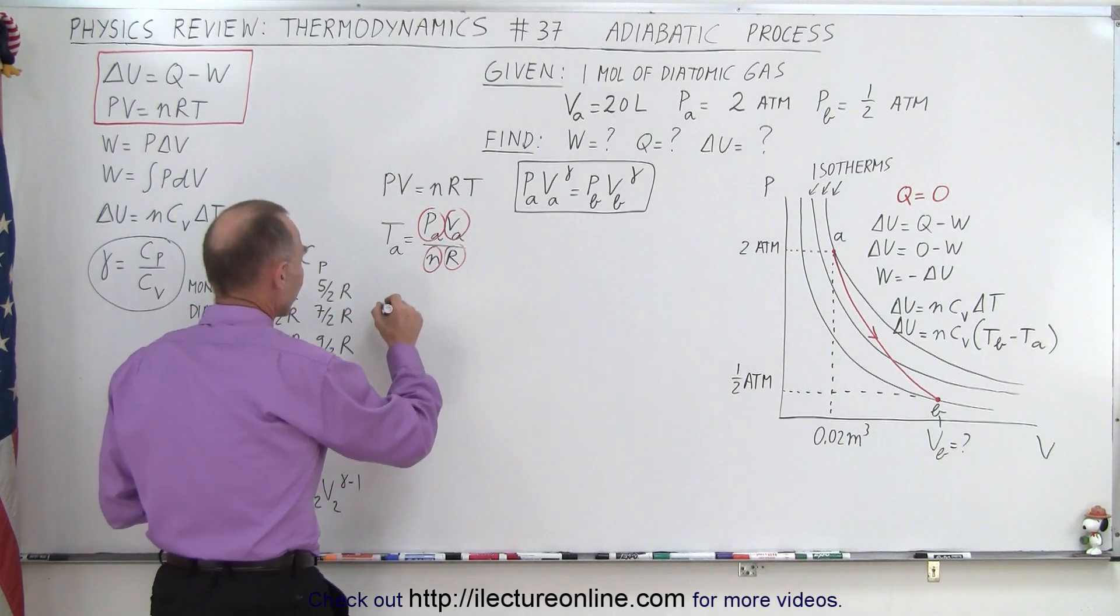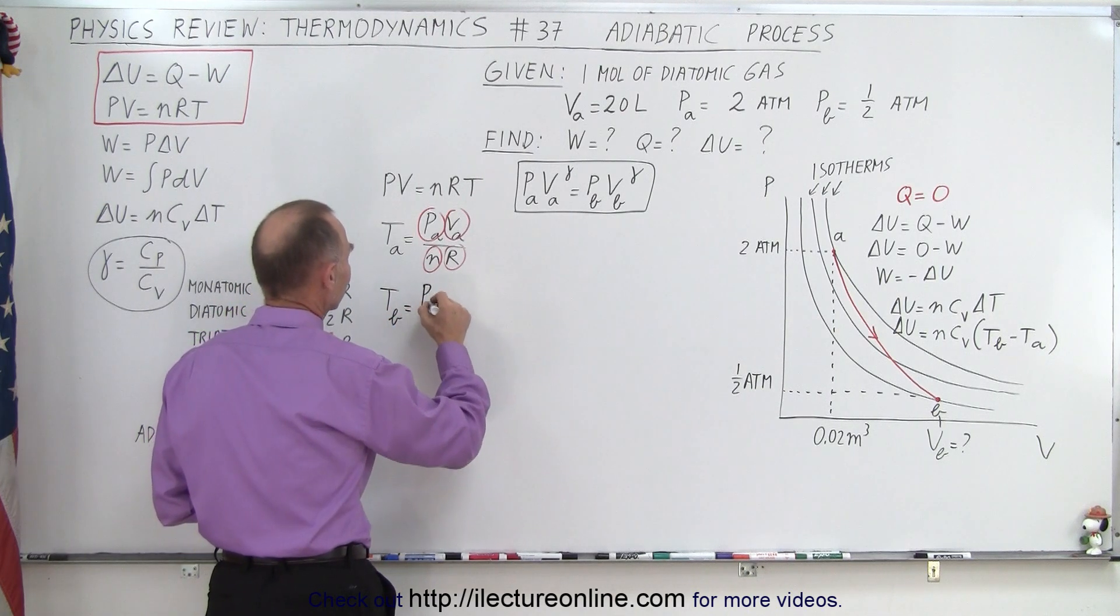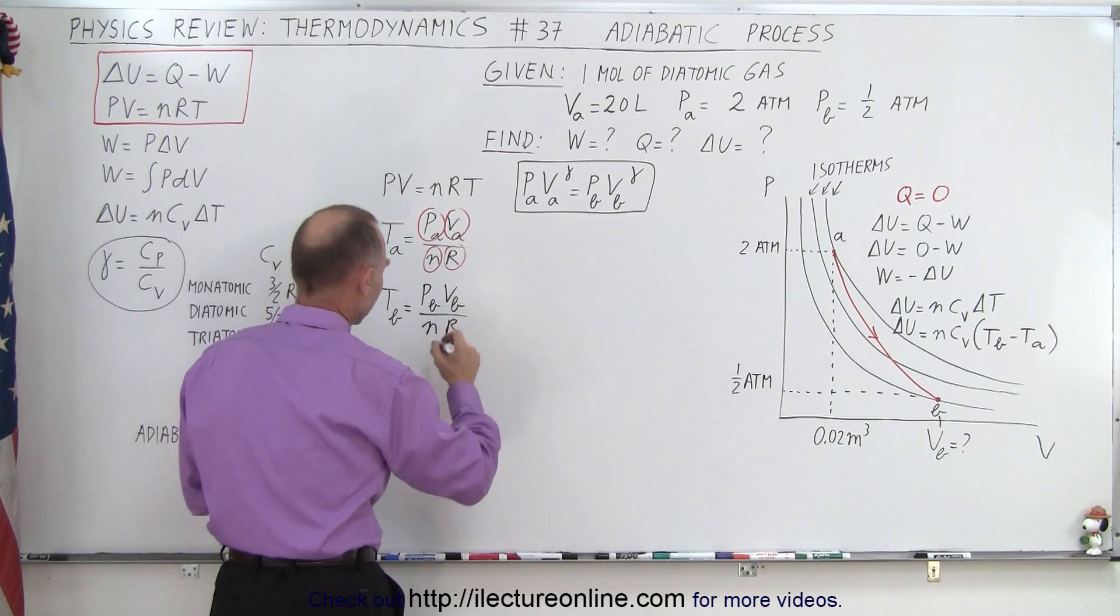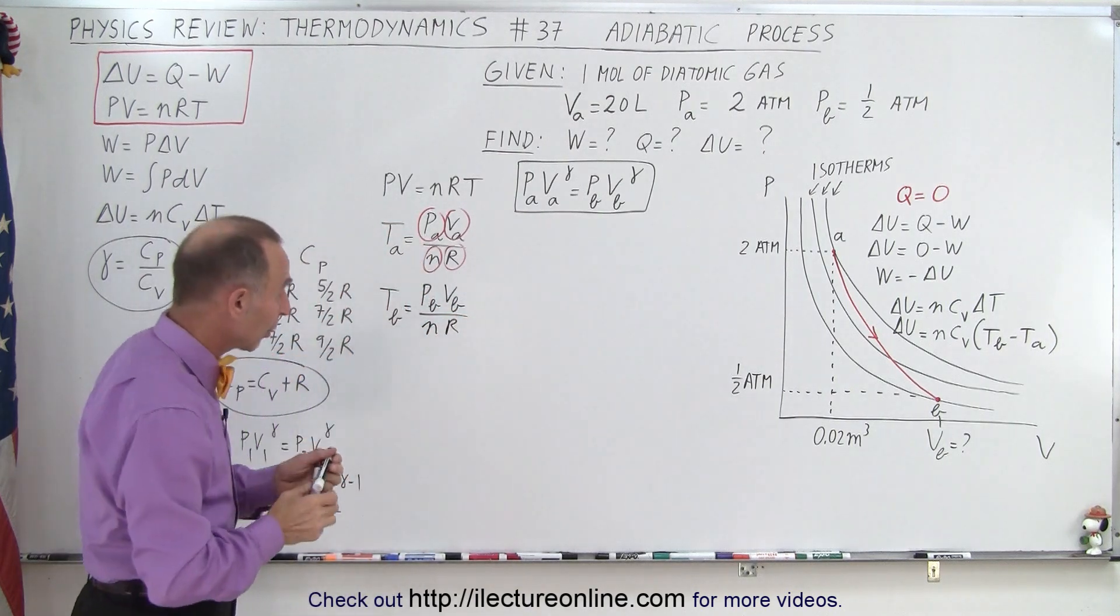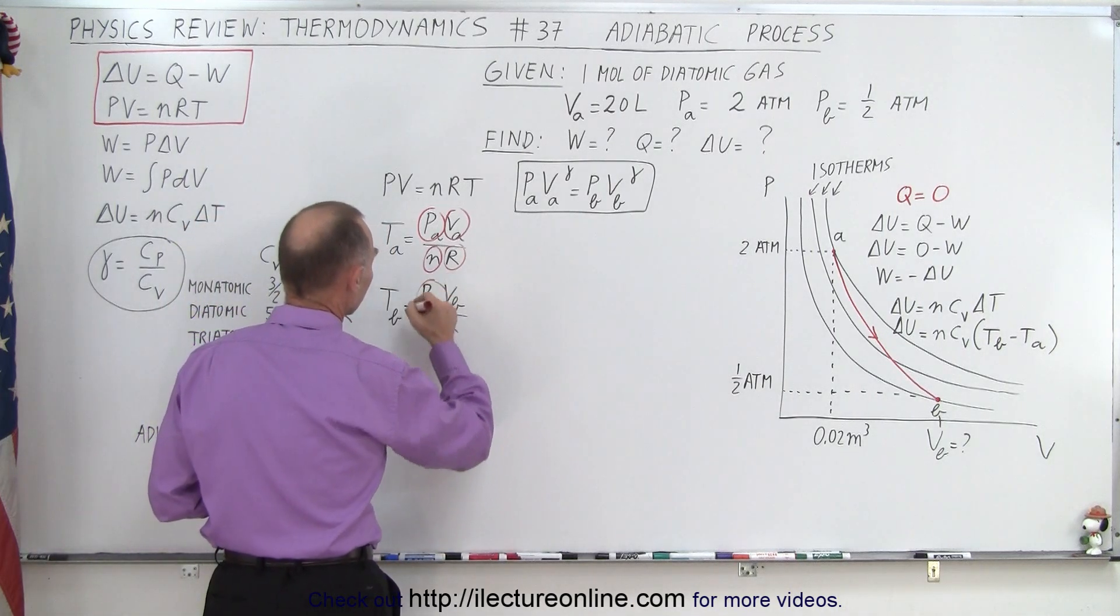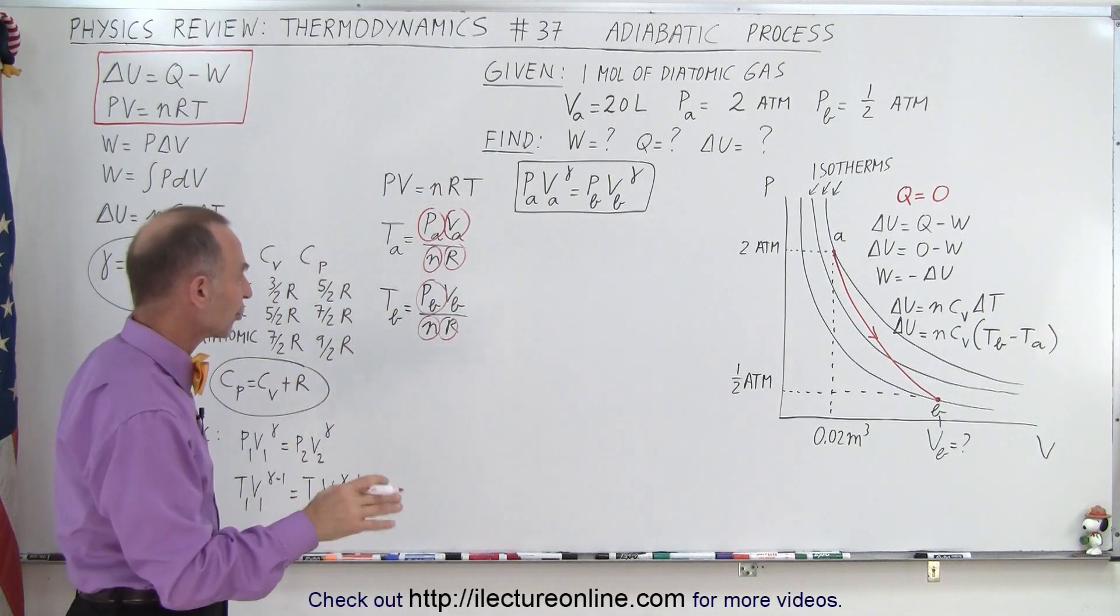So what if we need the temperature at B because we need the temperature at both ends of the process. That's equal to the pressure at B, the volume at B divided by N times R. And again, we always check to see what we know and what we don't know. We know the pressure at B, that's given. We know the number of moles, we know R, but we do not know the volume at B. So we can't find the temperature at B.